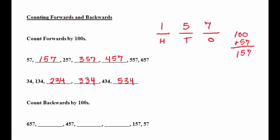So 6 is going to become 5. We take away 100 from 657, we have 557. We take away 100 from 557, now we have 457.